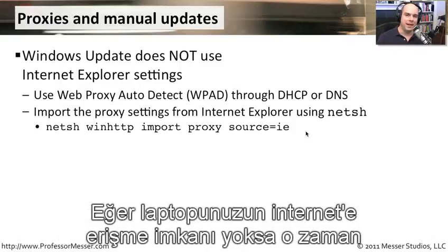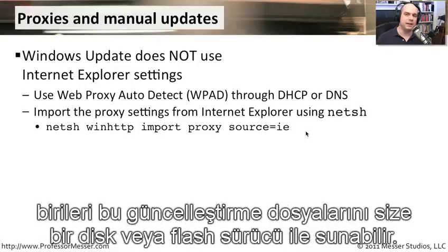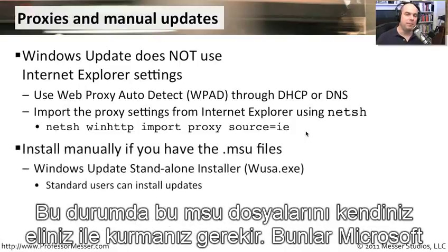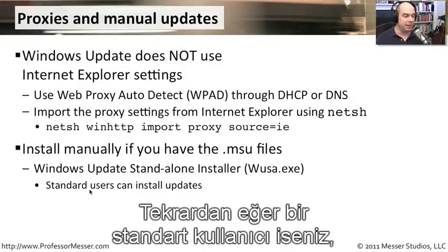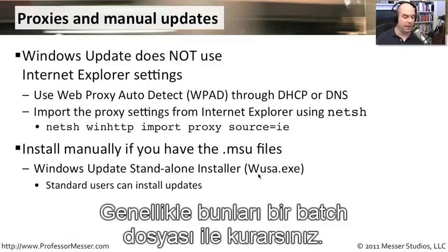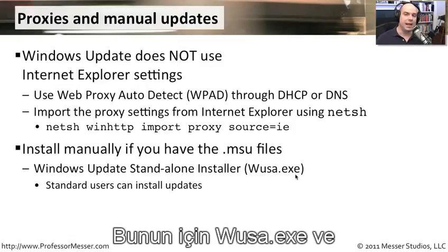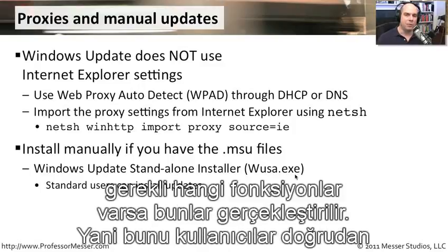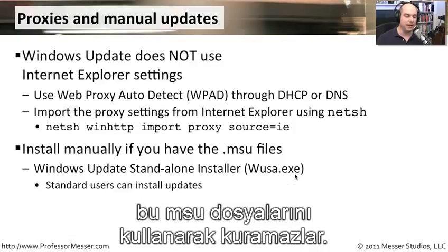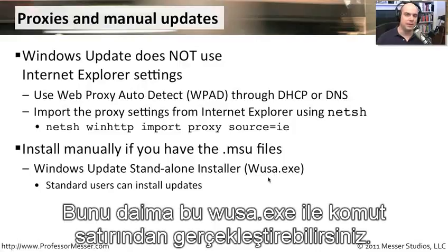If your laptop doesn't even have internet access, someone may provide update files on disk or a flash drive, and you need to manually install MSU files — Microsoft Update files. You use the Windows Update Standalone Installer, WUSA, to make that work. Standard users can install updates this way. Generally you set up a batch file with WUSA.exe and the name of the update file to install those behind the scenes at the command line.